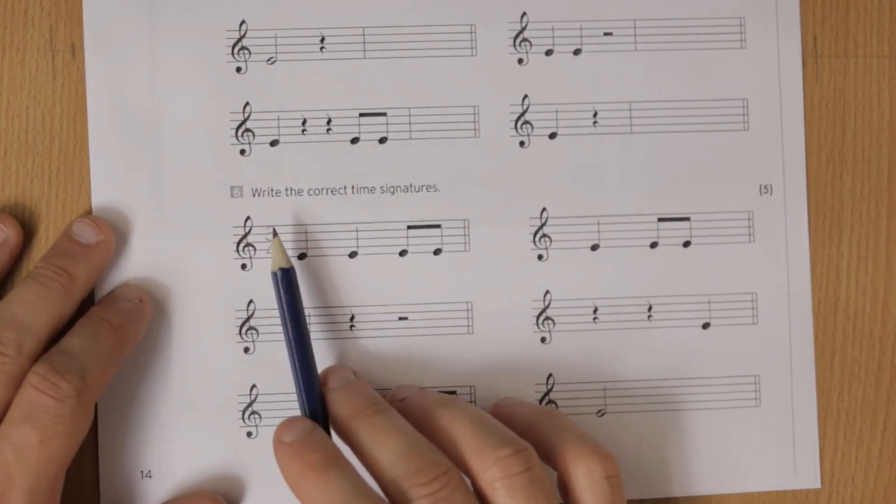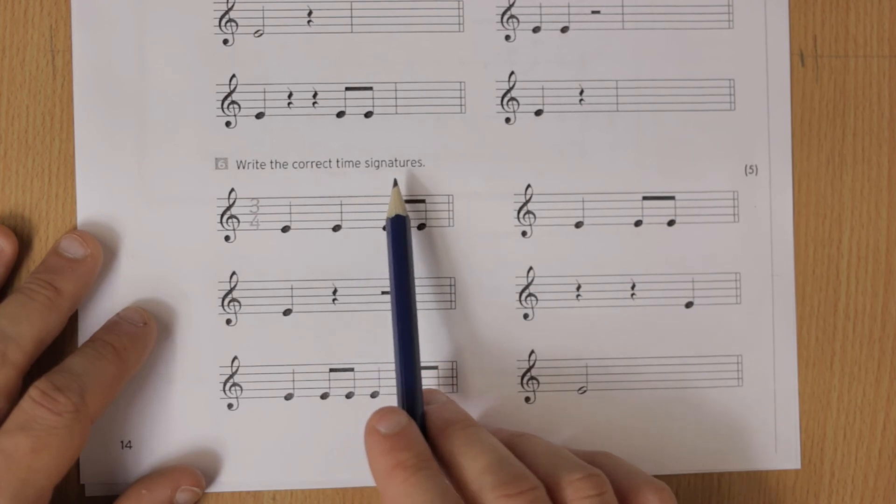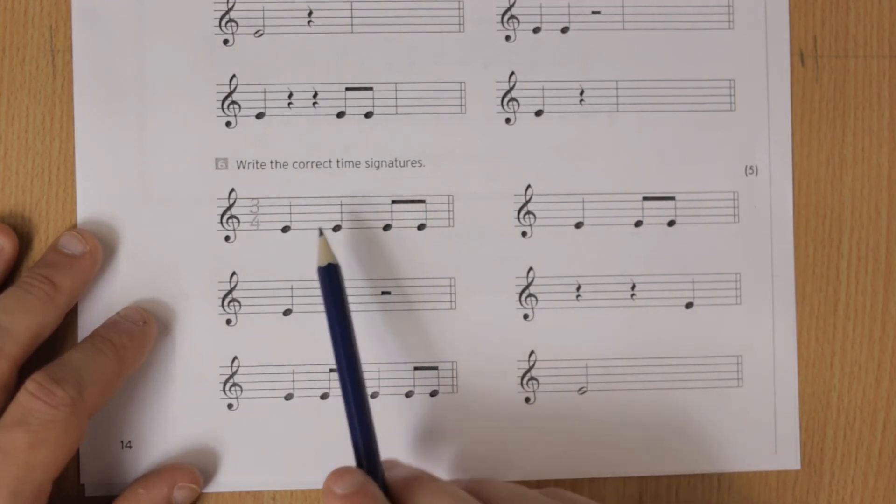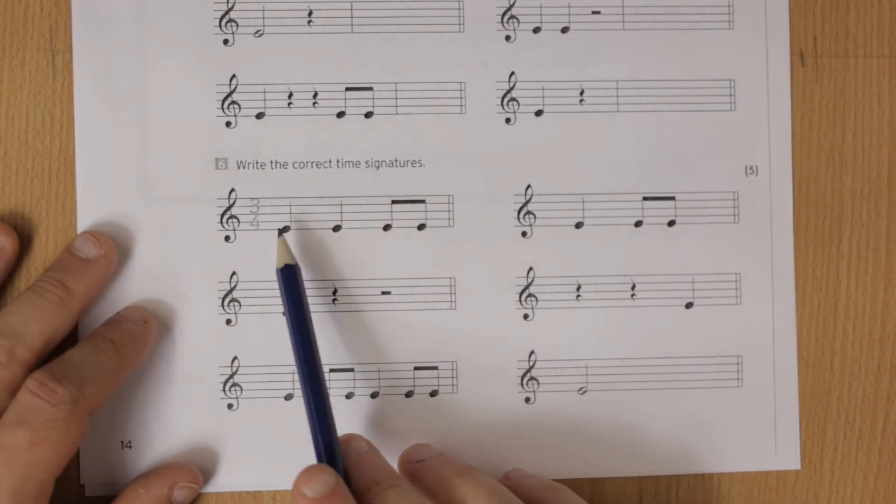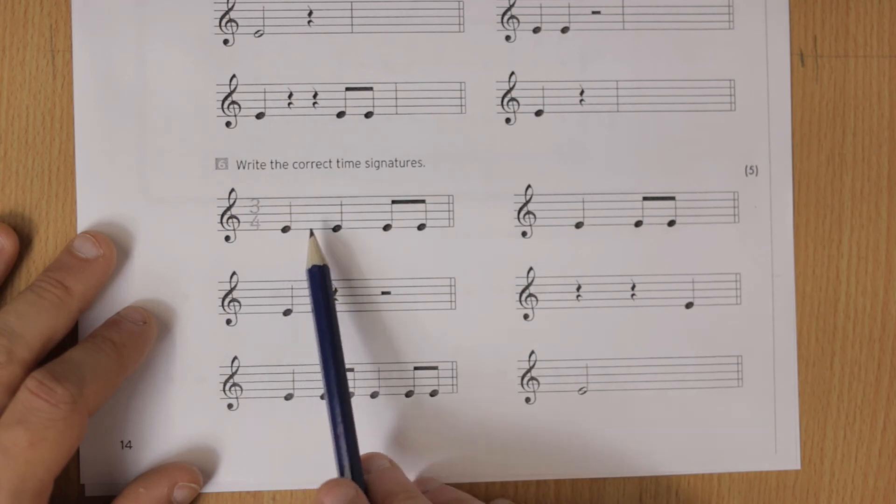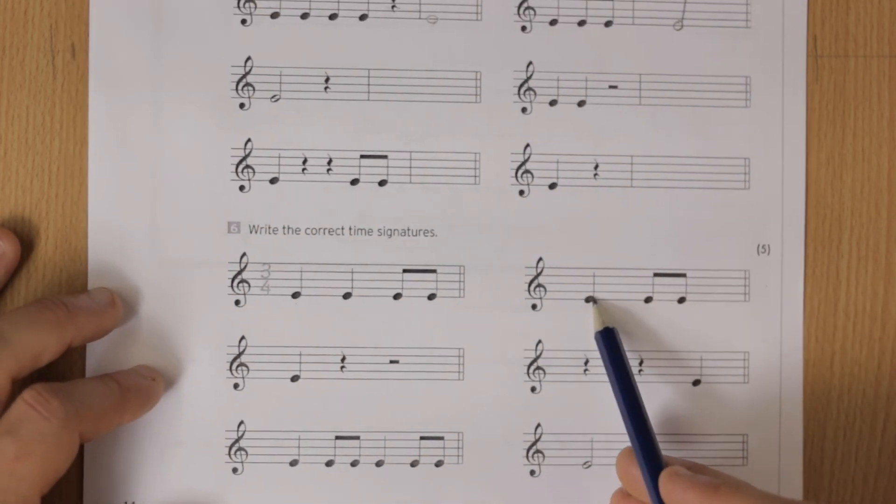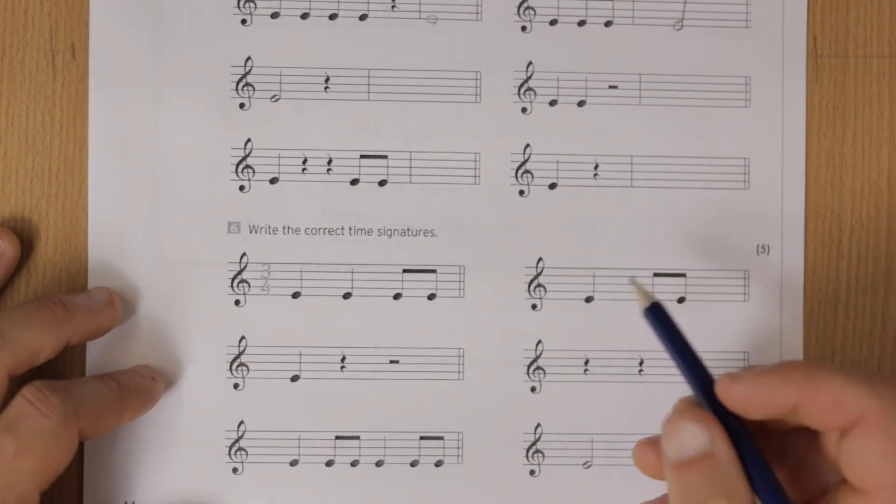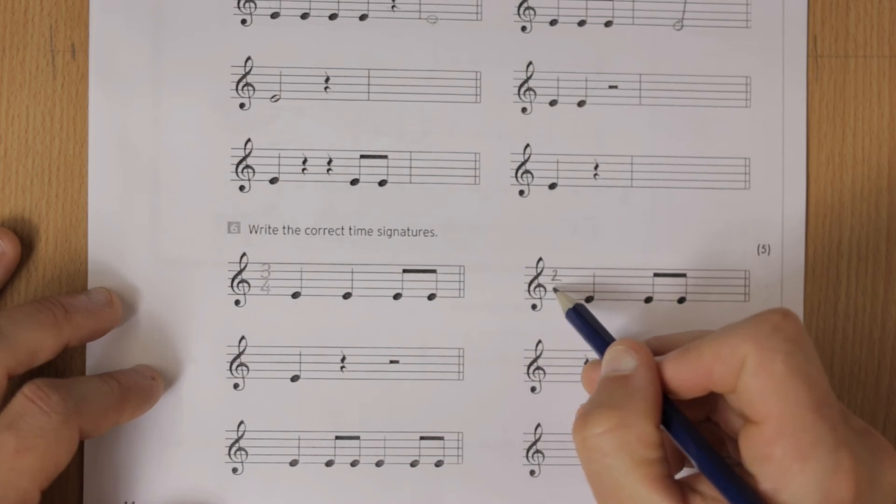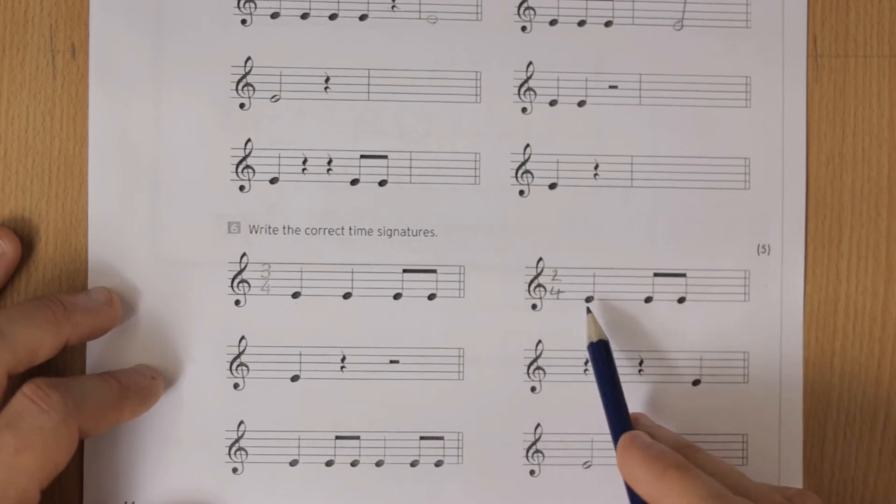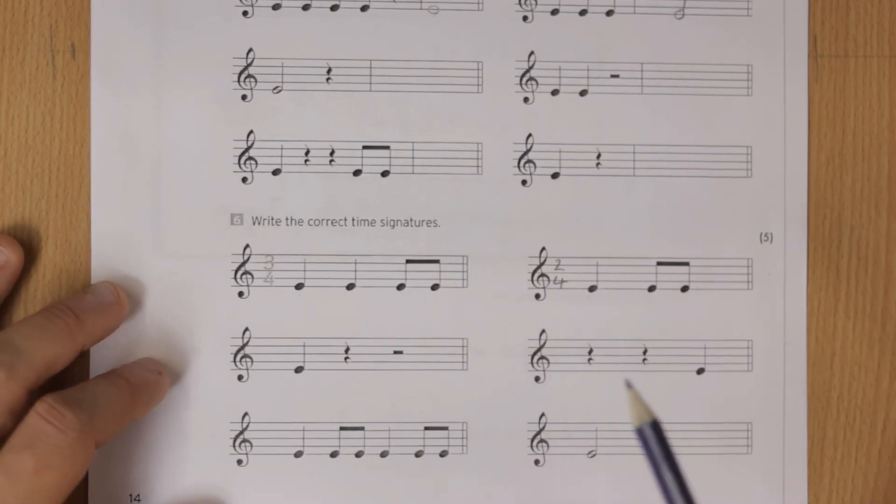Question six: write the correct time signatures. So we just need to count them up. They've counted this one - two, half-half is three, so that's three-four. I'll do one more for you, this one. That's one plus half-half is two, so that's two, and it's four because they're crotchet beats - that's two crotchet beats.